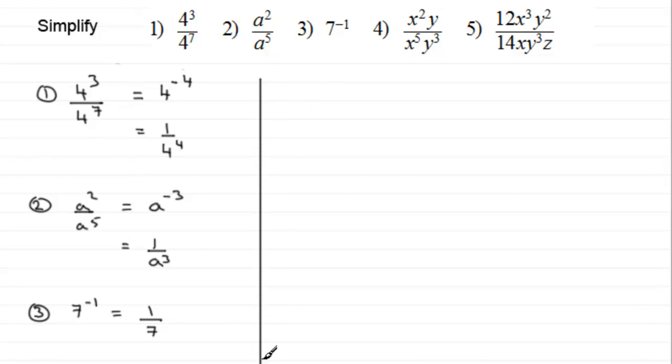Next up, question 4. We've got x squared y divided by x to the power 5, y cubed. With this one, we've got the same base here, x's, and the same base here, y's. So x squared divided by x to the power 5, subtract the powers, and you've got x to the power minus 3. 2 take away 5.